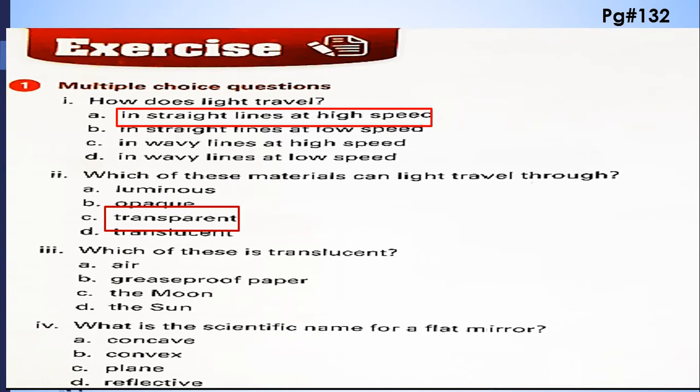Which of these is translucent: air, greaseproof paper, the moon, and the sun? So greaseproof paper is a translucent material.